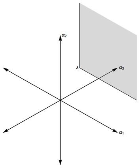In this context, a weight of a representation is a generalization of the notion of an eigenvalue, and the corresponding eigenspace is called a weight space.